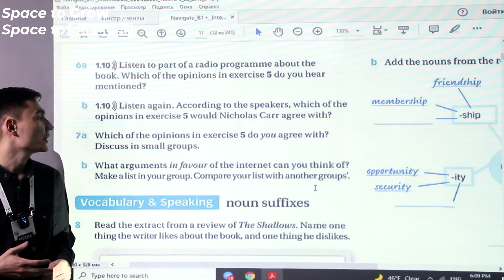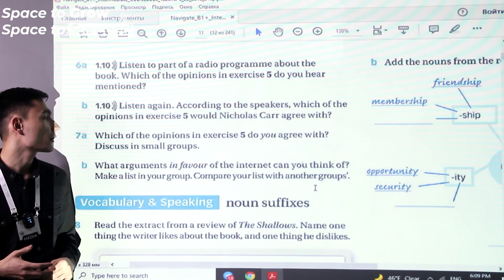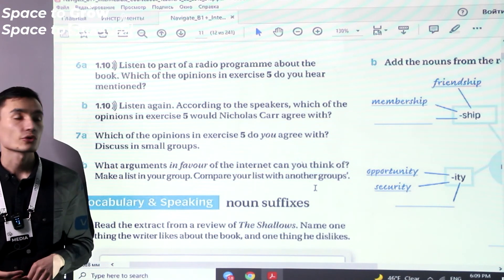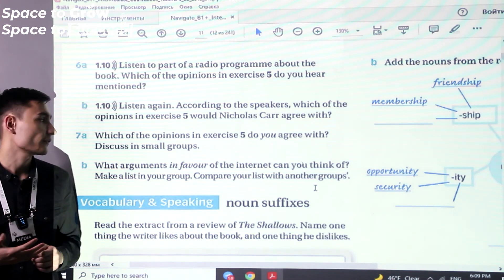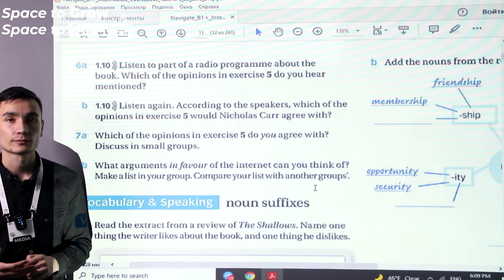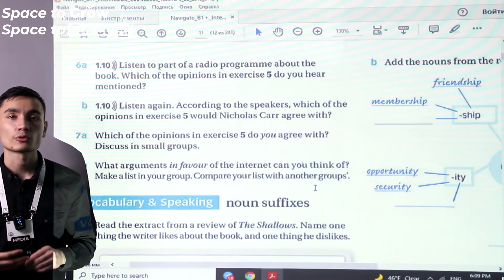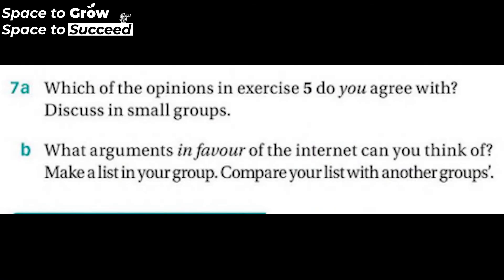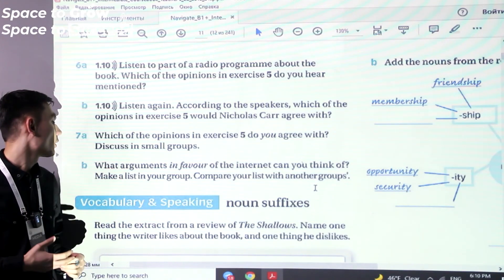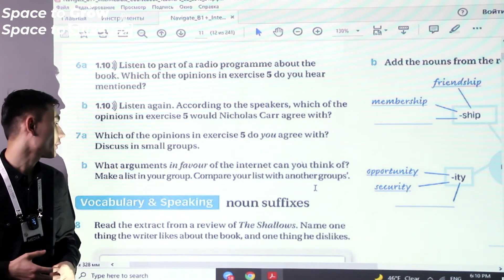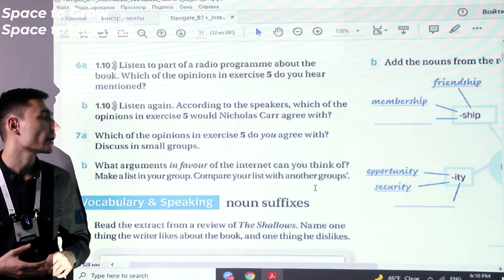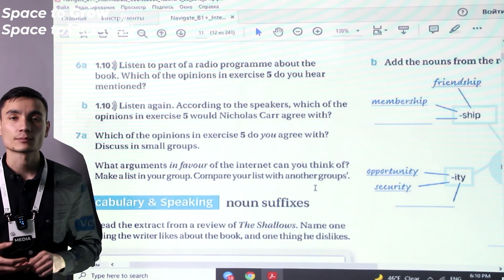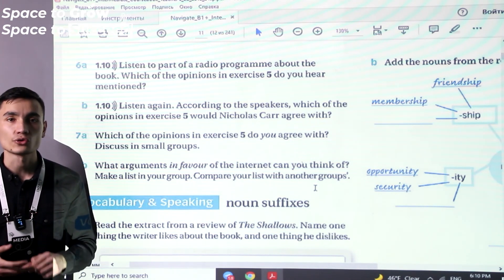Exercise 7a. Which of the opinions in exercise 5 do you agree with? Discuss in small groups. You have to discuss the statements you agree with and write them down. Pause the video and try to answer in a written form. Exercise 7b. What arguments in favor of the internet can you think of? Make a list in your group and compare it with another group. Pause the video, think of ideas that support the internet, and share with your groupmates.